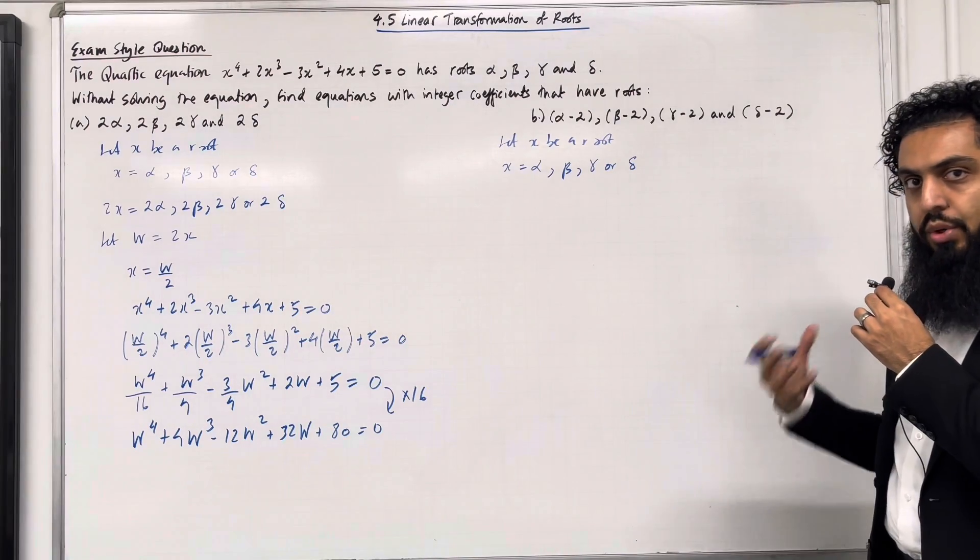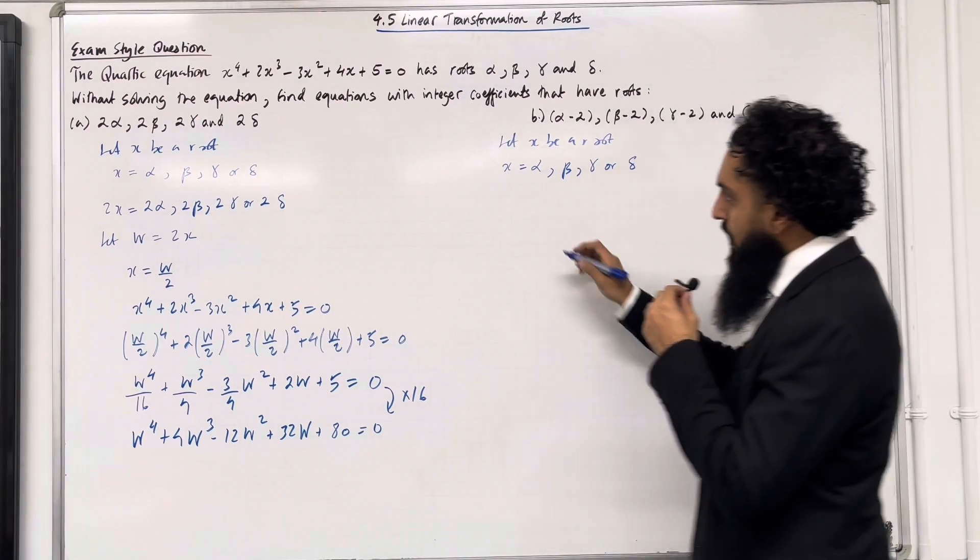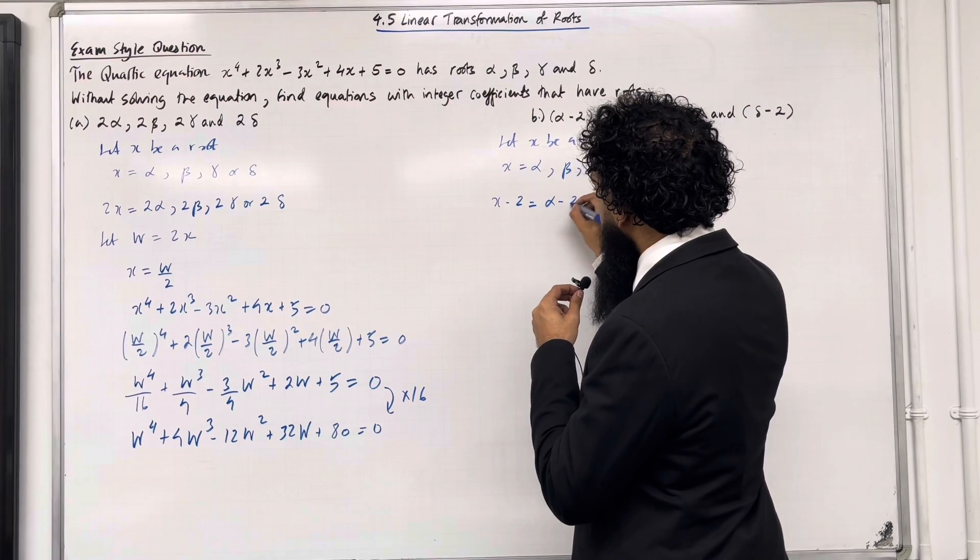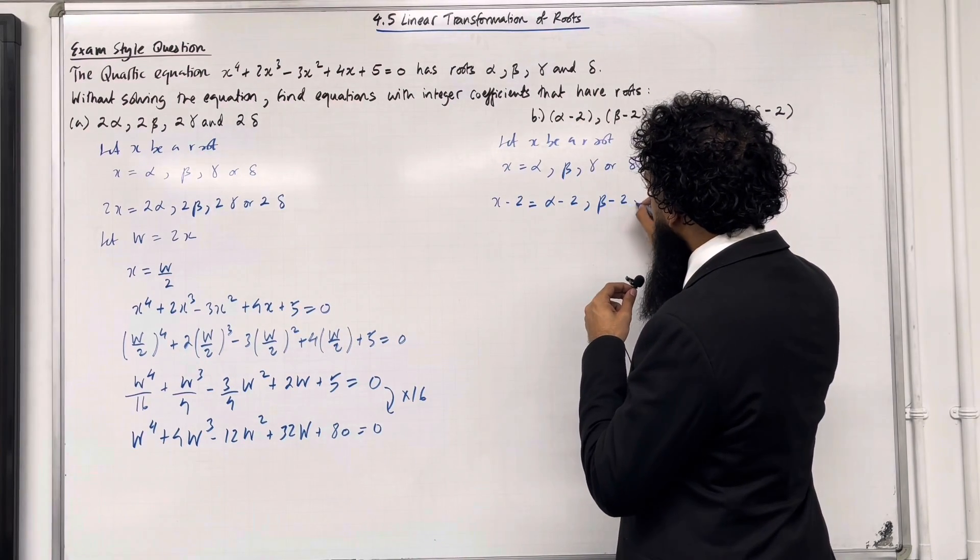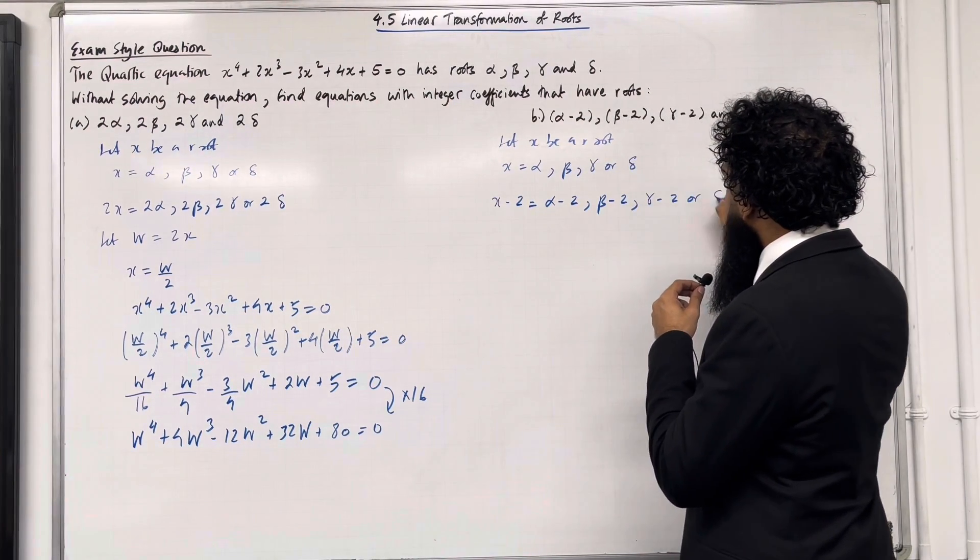Now I'm going to subtract 2 from the root x. So x - 2 can equal α - 2, β - 2, γ - 2 or δ - 2.